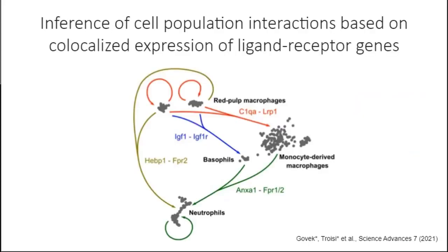Now that we have the relative location of different cell populations and the distribution of gene expression patterns in the tissue section, we can use that information to infer cell population interactions based on co-localized expression of genes coding for pairs of ligands and receptors. This is an example of the candidate paracrine interactions that STEVIA has inferred in the red pulp of that tissue section — between red pulp macrophages, monocyte-derived macrophages, basophils, neutrophils, and so on — giving an overall picture of the type of analysis one can do with transcriptome-guided analysis of multiplex immunohistochemistry data.